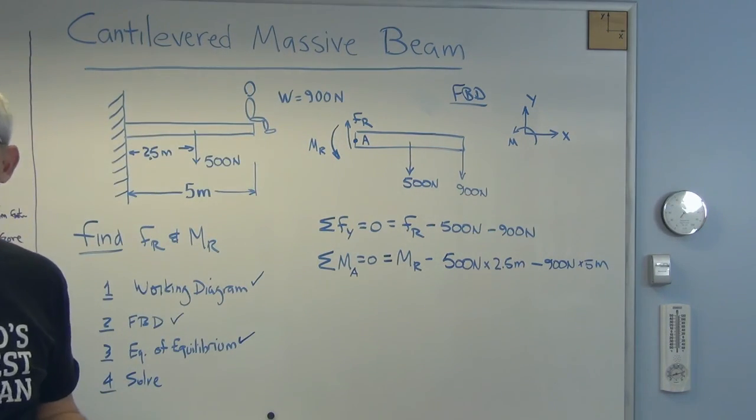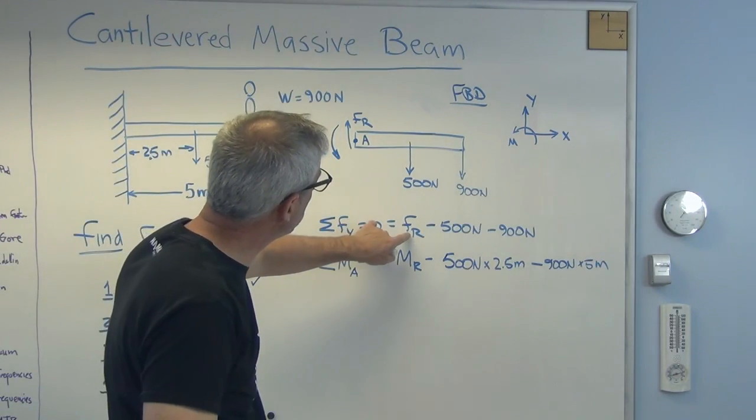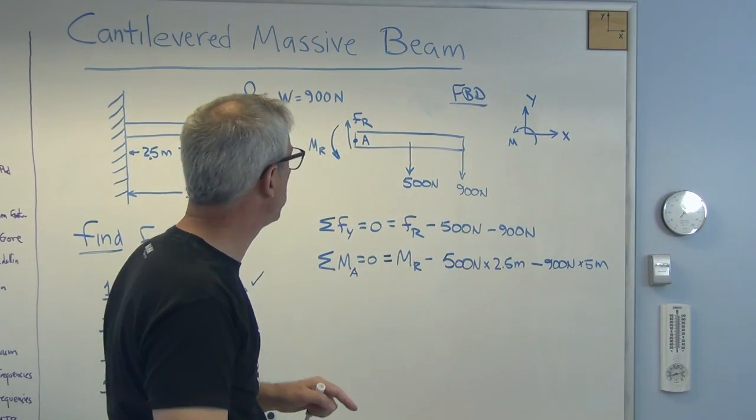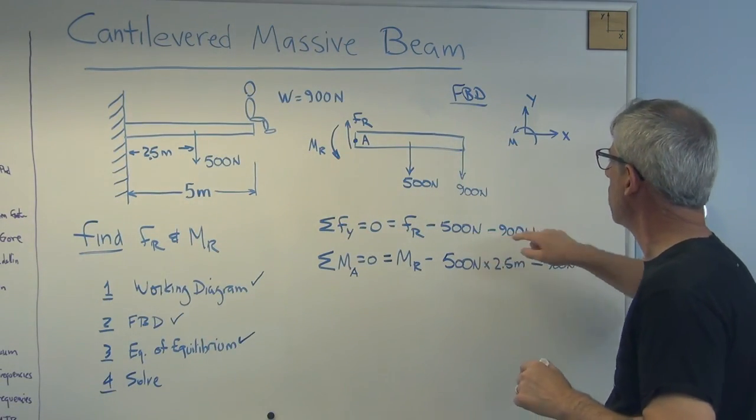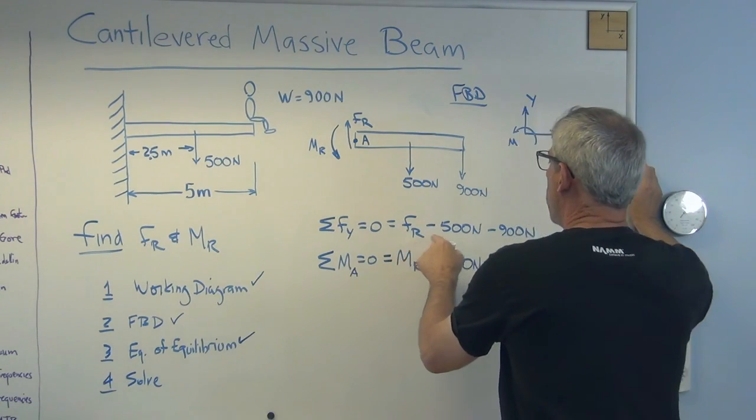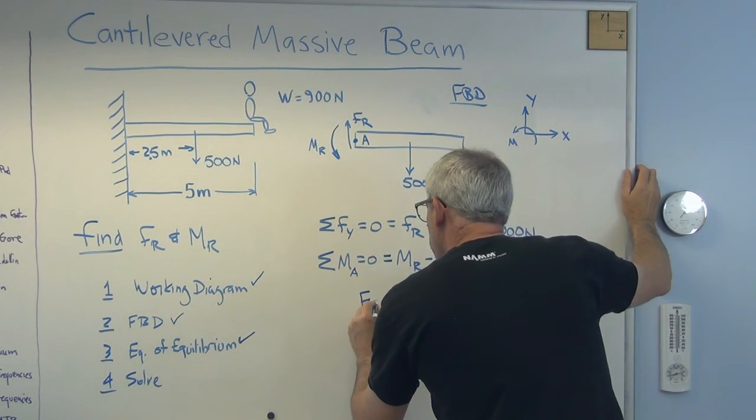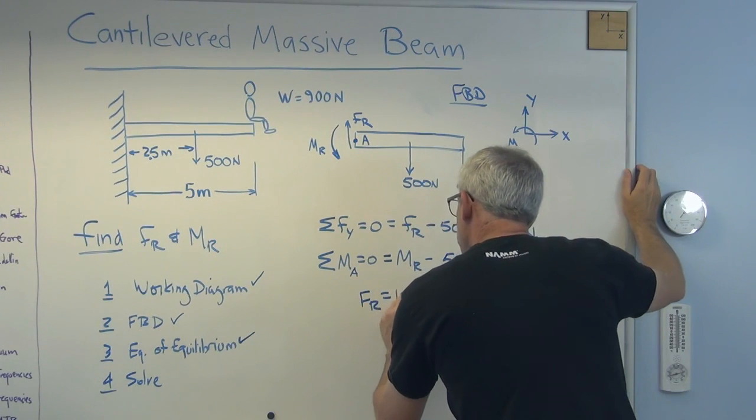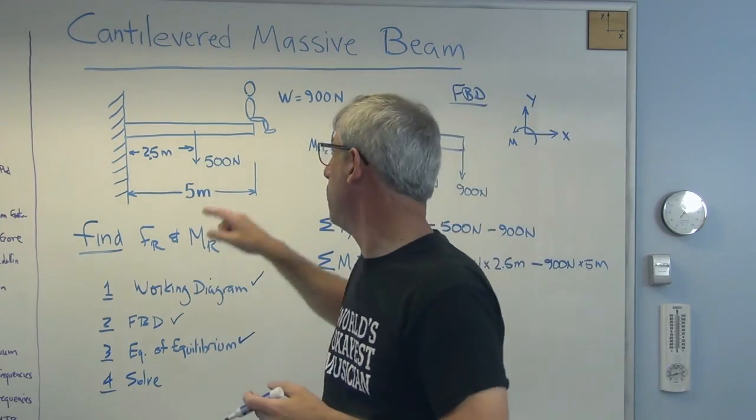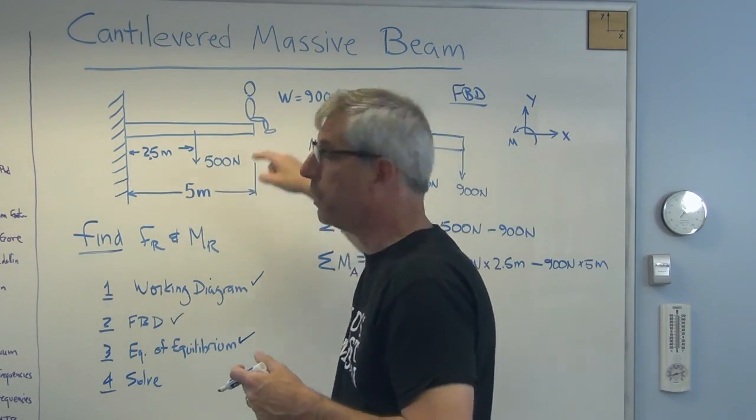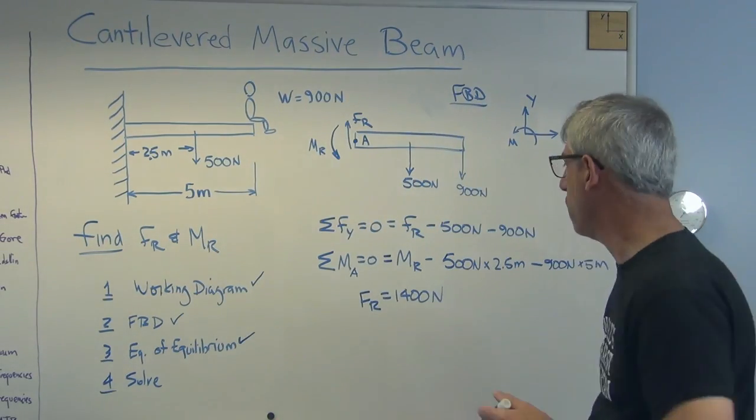Last thing to do, I've got to solve for something. Obviously, I'm trying to solve for the reaction force and the reaction moment. So let's do this one first. It's pretty easy. Those two add up to 1,400 newtons. So if FR minus 500 minus 900 equals zero, then the reaction force has to be 1,400 newtons. And that's not too hard to imagine. The reaction force better equal the force of the weight of the beam plus the weight of the guy sitting on the beam. If it was anything other than that, we'd be pretty worried.